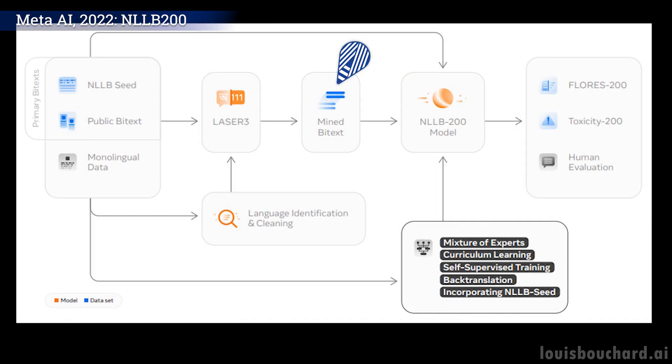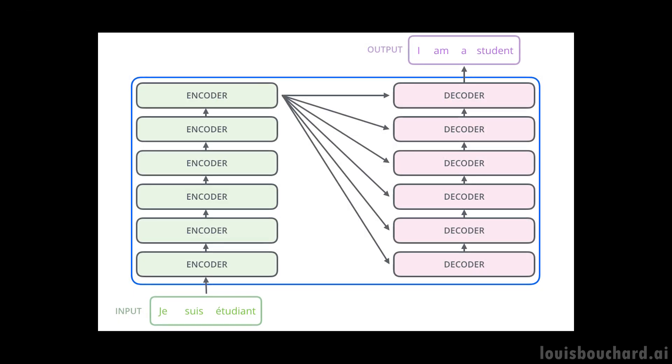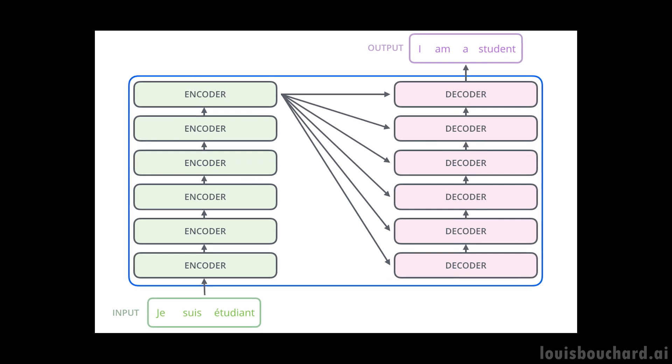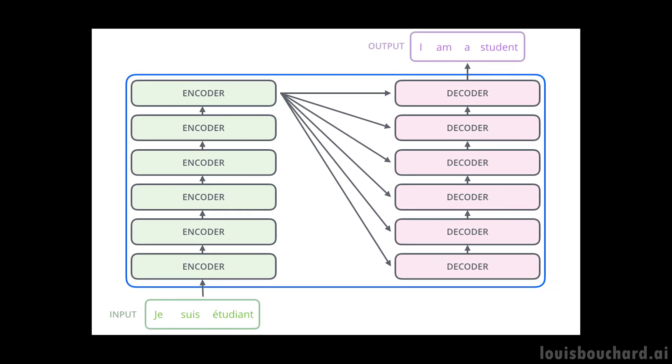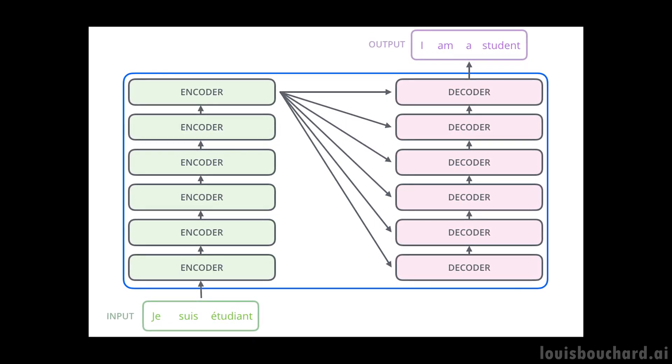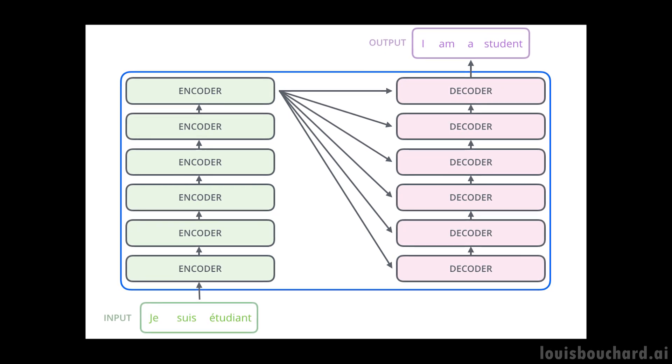Now comes the interesting part, the multilanguage translation model. Of course, it's a transformer-based encoder-decoder architecture. This means Meta's new model is very similar to GPT-3, and takes a text sentence, encodes it in order to decode it, and produces a new text sentence, ideally, a translation version of what we send it.